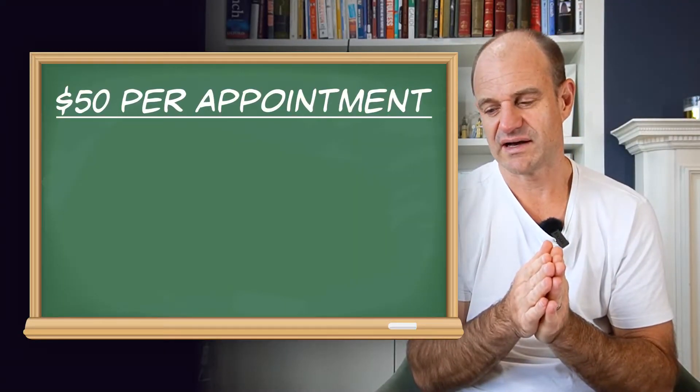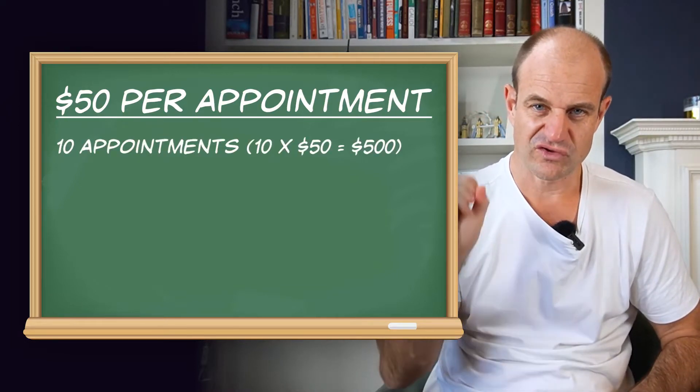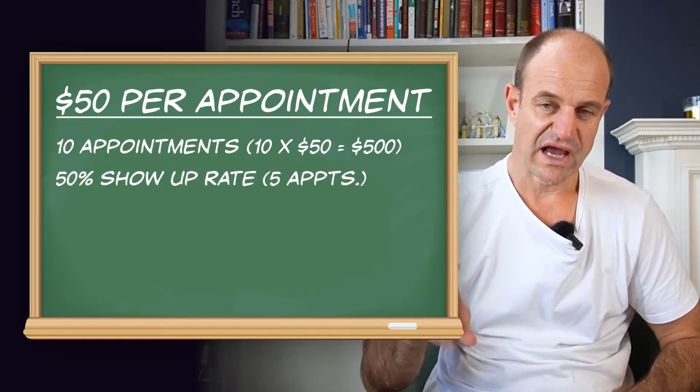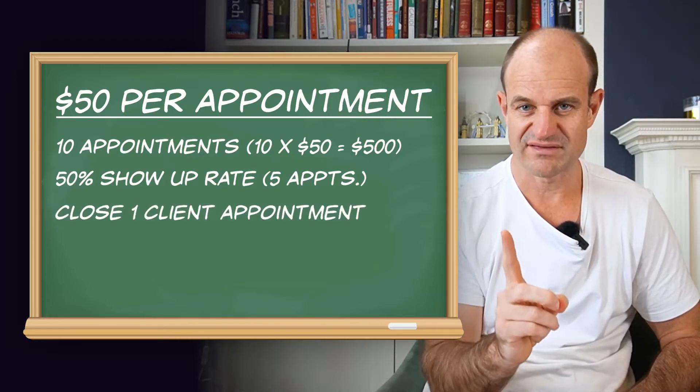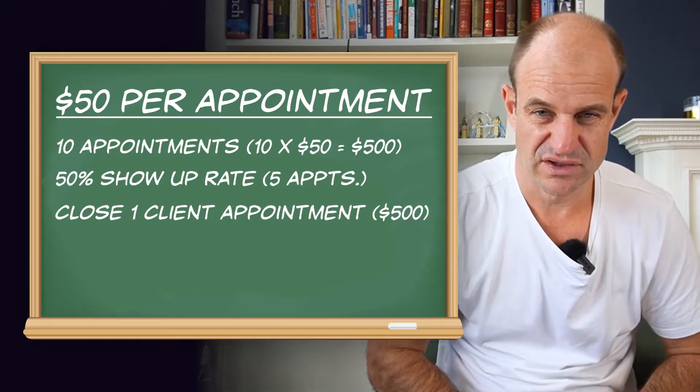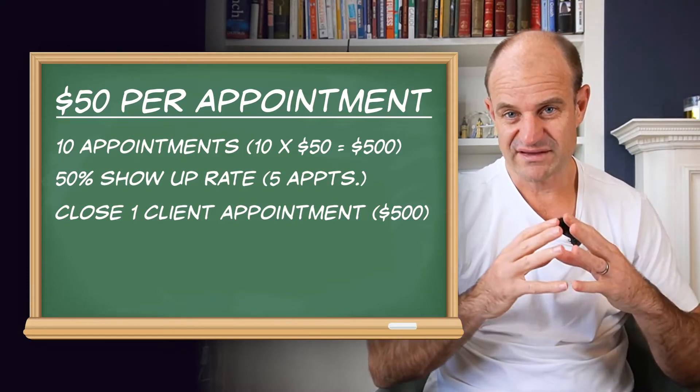Looking at the numbers: the cost to generate a booked appointment is roughly $50. So 10 appointments costs you $500. Roughly half those people will show up, giving you five appointments. If you're decent, you'll close one in five of those calls — so the cost per client acquired is about $500. This approach does require having some cash behind you. It's more for people who can already get results, are good at what they do, and can generate leads. If you can do those three things, you'll scale quickly with this process.